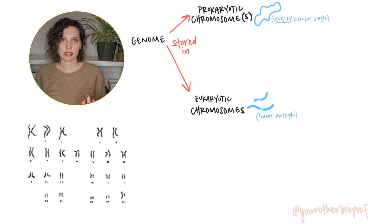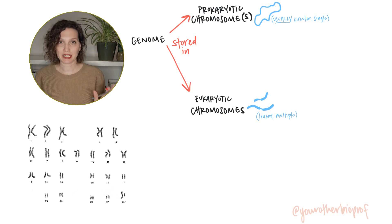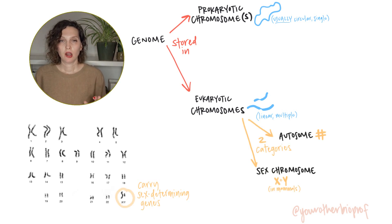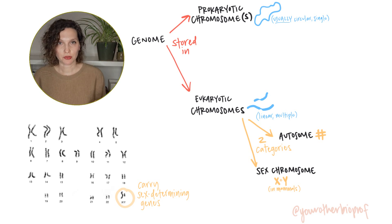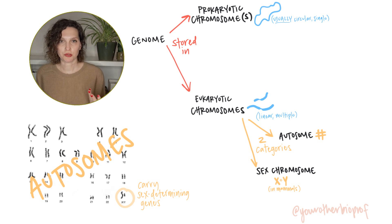You inherit one set from your mother and the other set of 23 from your father. One of those pairs of chromosomes is the sex chromosomes, X and Y, while the other 22 chromosomes are called autosomes and are just described by number: chromosome one, chromosome two, chromosome 22.